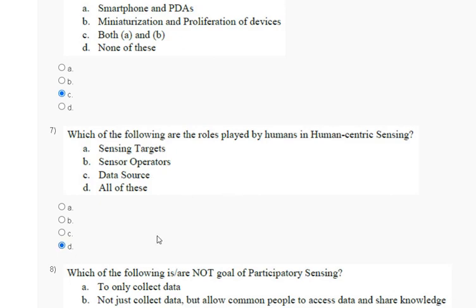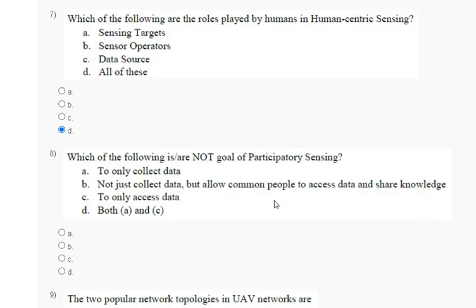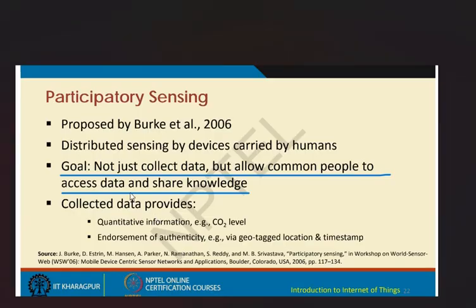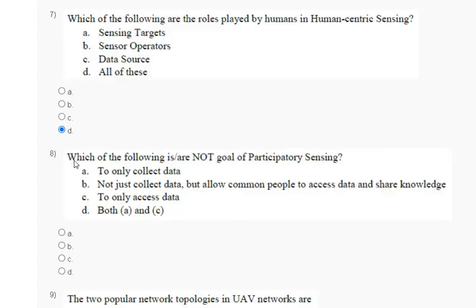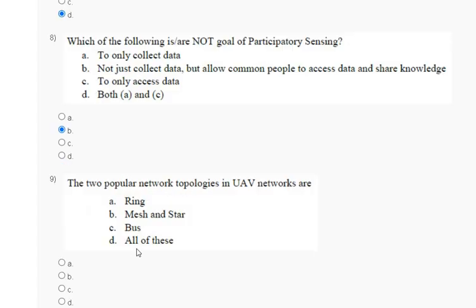Question eight: which of the following is not a goal of participatory sensing? The explanation: the goal is not just to collect data, but to allow common people to access data and share knowledge. The correct answer for question eight is option B.